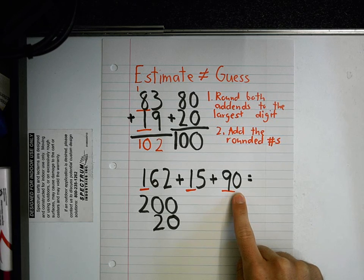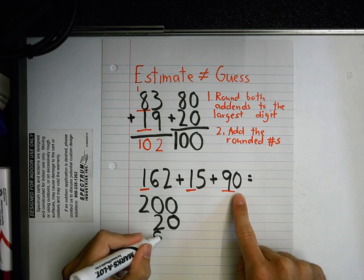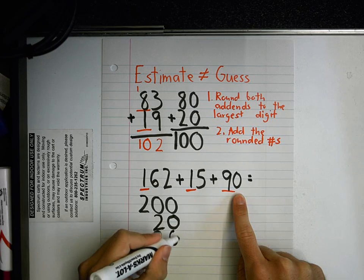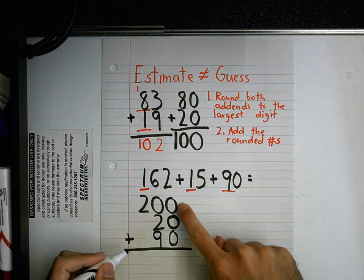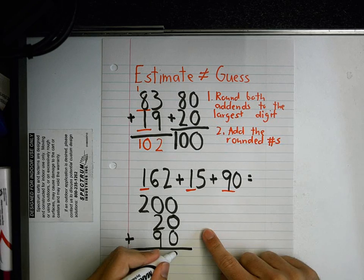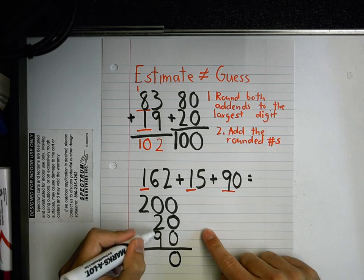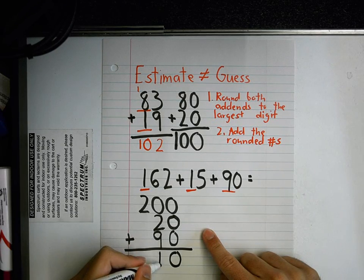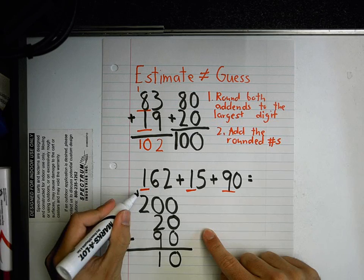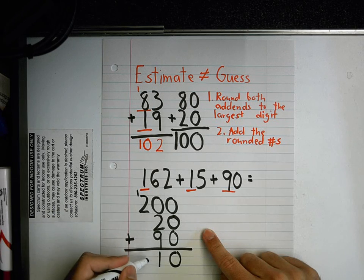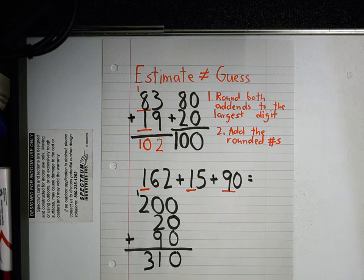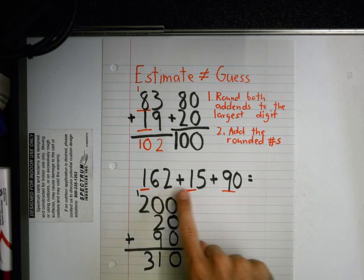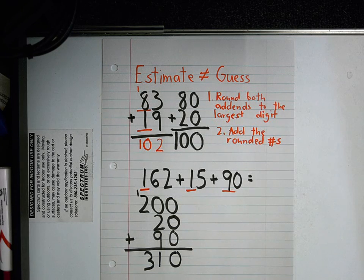Okay, now I'm gonna add them up. Zero plus zero plus zero equals zero. Nine plus two plus zero equals 11. One plus two plus nothing equals three. So when I estimate the sum, it turns out to be 310 when I rounded each number to the greatest digits.